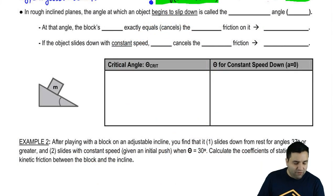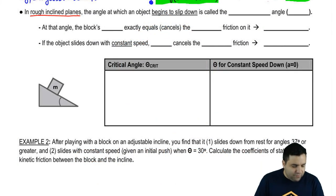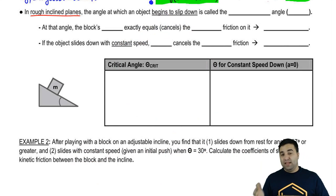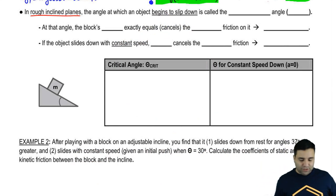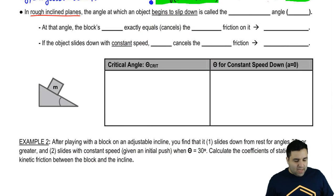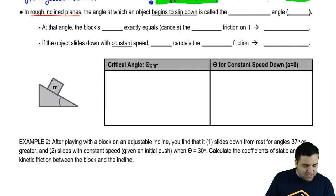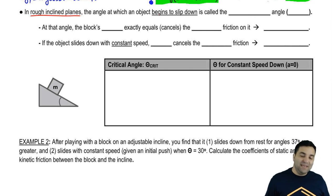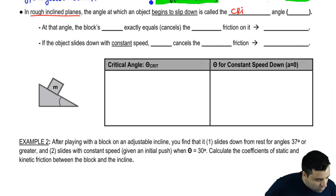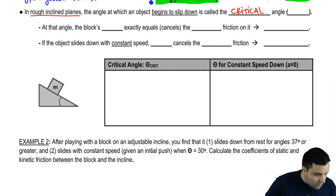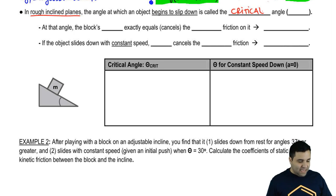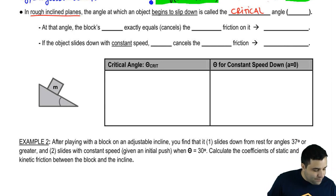When we have rough inclined planes — that is, inclined planes that are not frictionless — we have a special angle. The angle at which an object would begin to slide is called the critical angle.